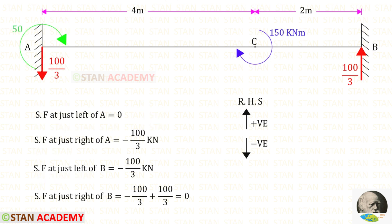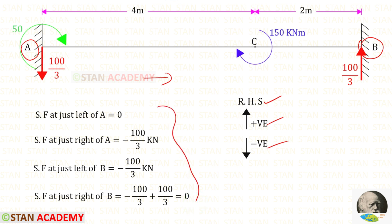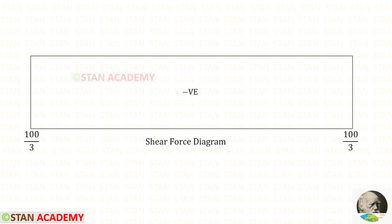Now let us find the shear force values. Moving from point A towards point B, we apply the right-hand side rule: upwards is positive and downwards is negative. Using this rule we can find the shear force values, and here you can see the resulting shear force diagram.